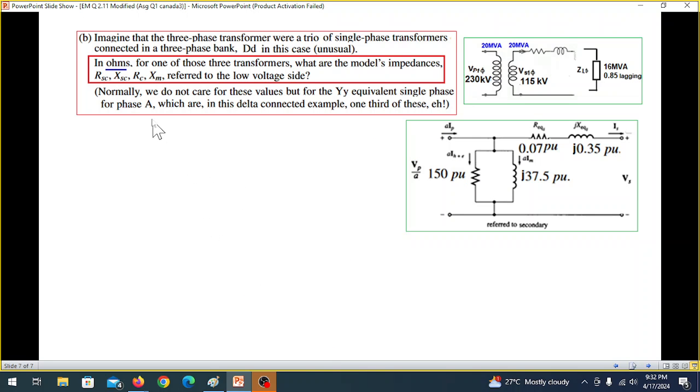Now we come to the second part of the question. What it is saying, imagine that the three-phase transformers were a trio-single-phase transformers connected in a three-phase bank. So there are three transformers connected, and DD means delta-delta. In ohms, for those three transformers, what are the model impedances? RSC, XSC, RC, XM. So these are RSC or R-equivalent, X, and similarly, RC and XM. Now these are in PU. What he is asking is to write these values in terms of ohm.